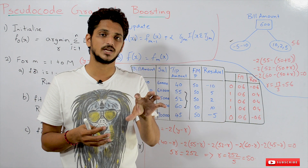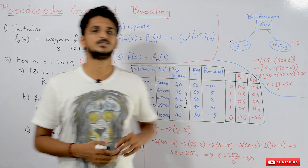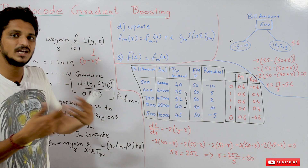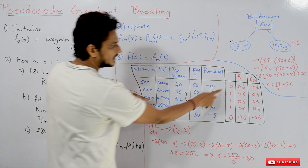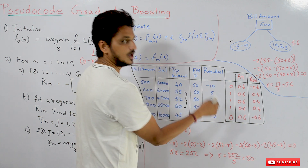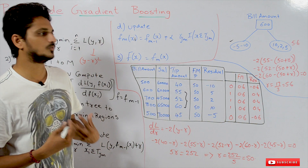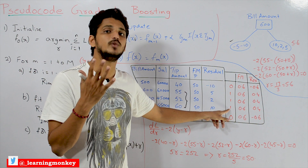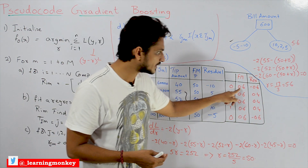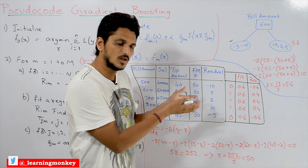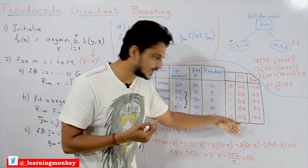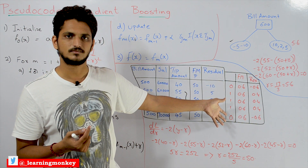Now we give an intuition for how gradient boosting can be used for classification models. For the same dataset, we use binary labels: 1 for positive points and 0 for negative points. Our first model assigns the probability of being positive — with three positives out of five points, the initial predicted probability is 0.6 for all data points. We then calculate the residuals.